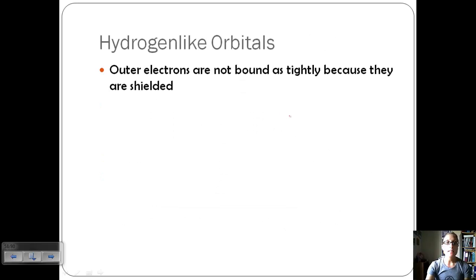Let's look at some hydrogen-like orbitals, even though all of our atoms are polyelectronic except for hydrogen. Outer electrons are not bound as tightly because they're what we call shielded. Those outer electrons have inner electrons that are shielding basically the nucleus from those outer electrons, so they're not feeling the pull of the nucleus as much.